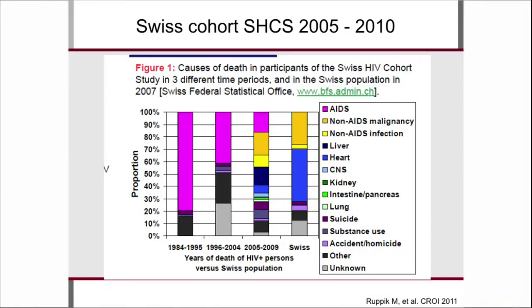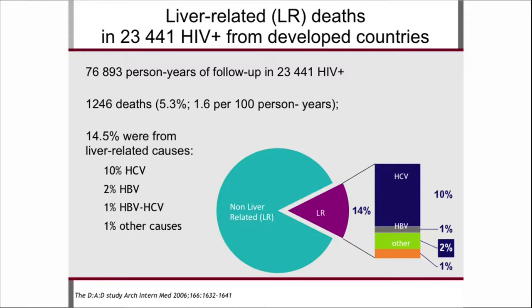More importantly, the Swiss cohort compared HIV-related mortality to the general population, and what you see is that HIV patients die from similar diseases as the general population. Coming back to liver disease — this is from 2006 but still true — the DAD study, a large cohort with more than 75,000 patient-years, showed that 14% of patients were dying from liver-related deaths, quite similar to the number I was showing before.